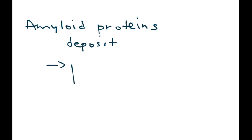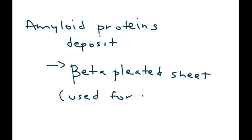The amyloid proteins that do deposit have a very distinct feature, and that is described by their appearance, which is a beta pleated sheet. And this is important because this structure is used for identification purposes, and in particular what I'm referring to is when you actually do the staining.